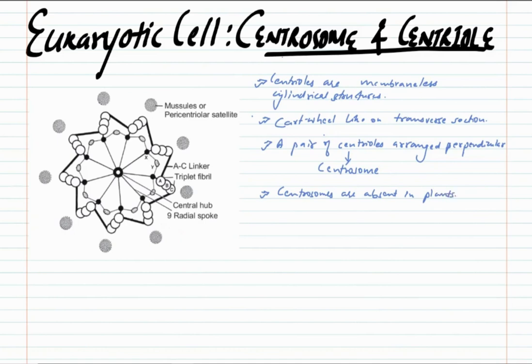Centrosomes contain two centrioles located just outside the nucleus, and these centrioles lie at right angles to each other. Each centriole is surrounded by amorphous pericentriolar material.